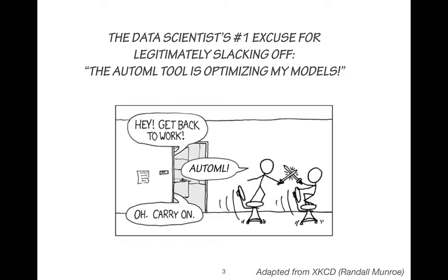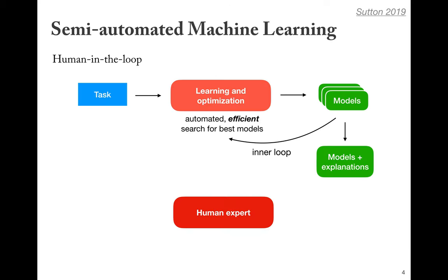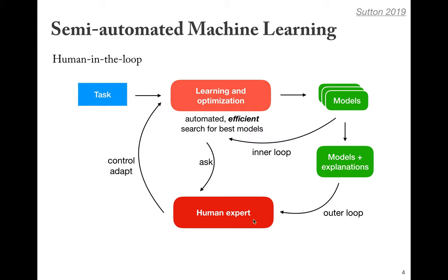Ultimately the goal is, at least for data scientists, to take over part of their work so they can focus on more important things related to building machine learning models and deploying them in real life. In practice we cannot completely automate this, at least not now, so there will always be an element of the human in the loop. We'll still focus on developing the best learning and optimization techniques, and these systems will create models and explanations that a human expert can review — then decide whether that's good enough or whether to restart the optimization differently, maybe change an objective function or the data.